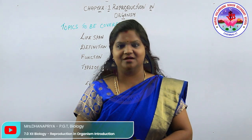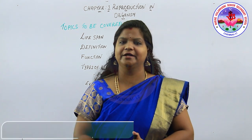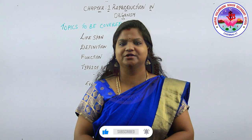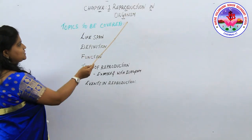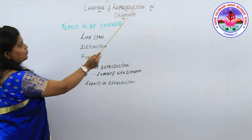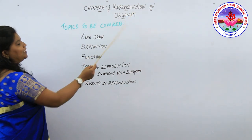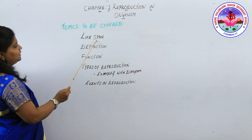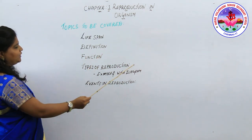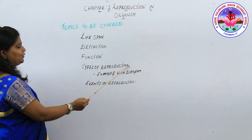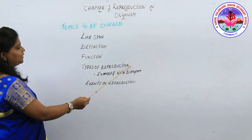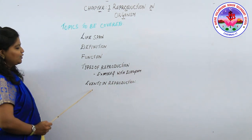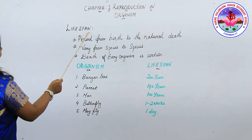Hello students, welcome to biology class. In the unit on reproduction, we completed human reproduction and reproductive health. Now we're going to proceed with Chapter 1: Reproduction in Organisms. In this chapter, we're going to cover the topics: lifespan, definition, function, and types of reproduction — asexual and sexual — with examples and diagrams, and also events in reproduction.